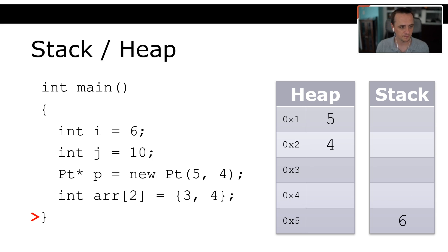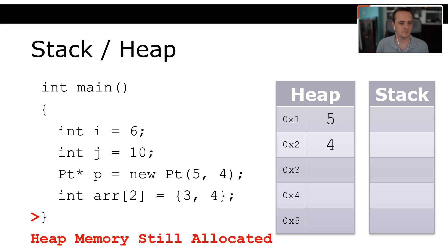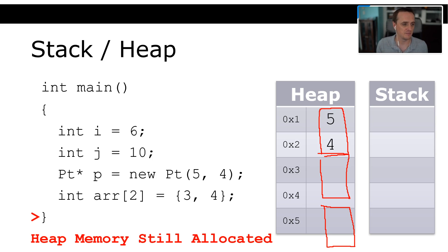This is a memory leak. If this function gets called 60 times per second in a video game, every time you call it, it allocates memory on the heap and you are not freeing that memory. This is where C++'s manual memory management comes in — whenever we allocate memory on the heap, we have to deallocate that memory later.